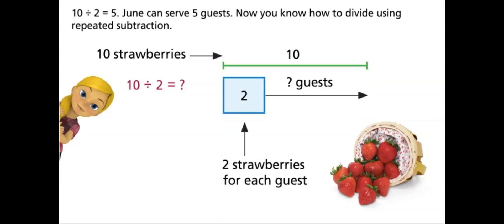Ten divided by two equals five. June can serve five guests. Now you know how to divide using repeated subtraction.